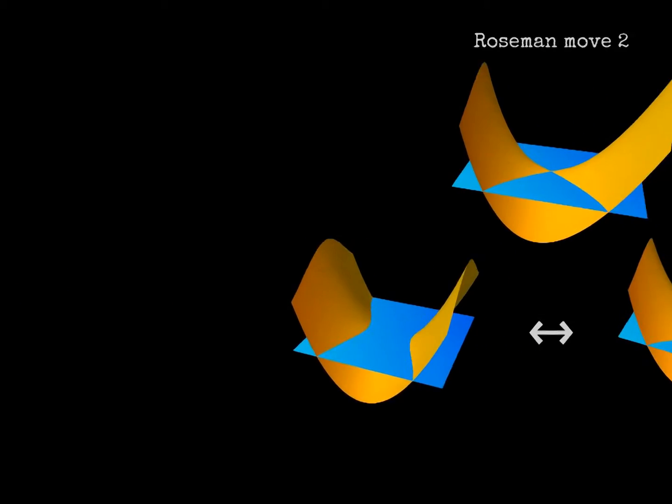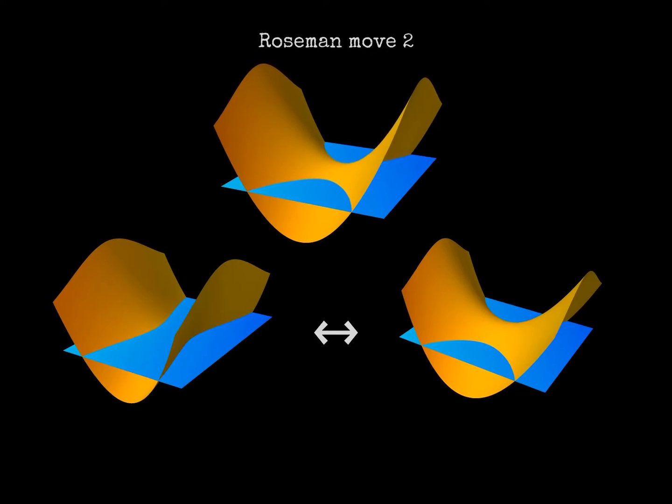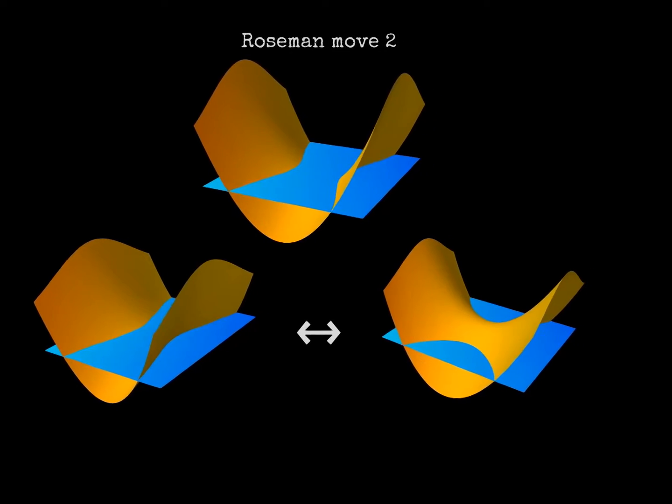Here is another move. The yellow surface is a saddle, just like a mountain pass. The mountain pass can be below the blue surface or above it. This is the second of the Rosemann moves.